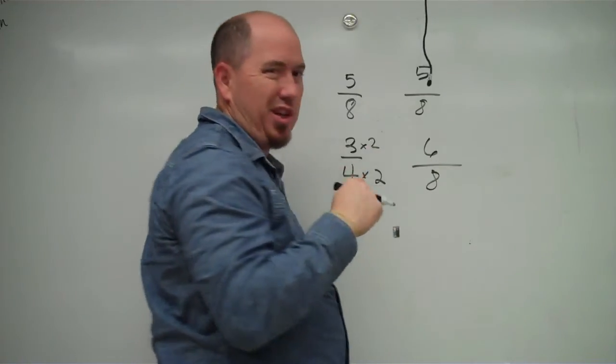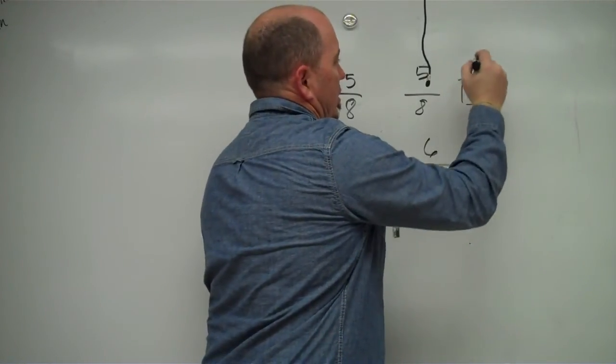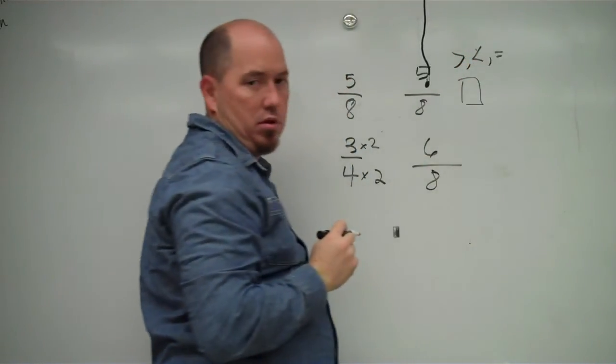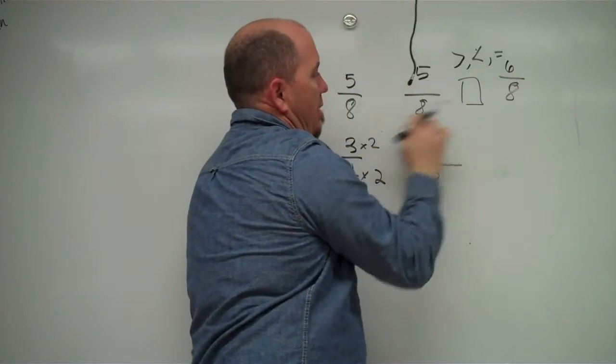So 3 fourths is equivalent to 6 eighths. Well, how does that 6 eighths relate to 5 eighths? So is it greater than, less than, or equal to 6 eighths? Well, the numerators, the denominators are the same.